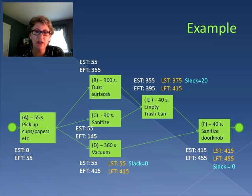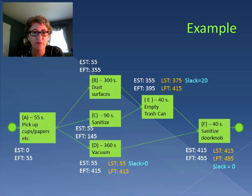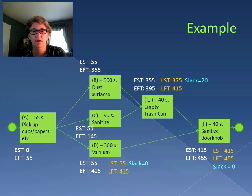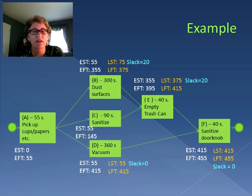Let's take a look at Activity D. Activity D must be finished by 415, because that's the latest Activity F can start. We subtract out the 360 seconds of time for D and find that our latest start is 55. There's no difference between the late start and the early start, so we have a slack of zero. For Activity B, it has to be done by 375, because that's the latest Activity E can start. Notice the latest start time of the activity that follows it is the latest finish time for that activity. So the latest finish time is 375 — we subtract out 300 for the activity time, giving a late start time of 75, and a slack of 20.